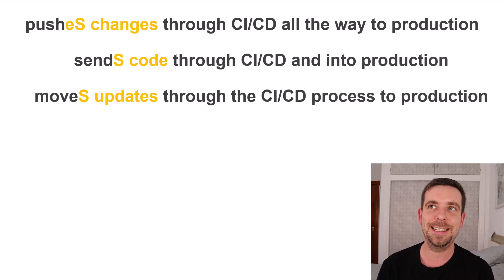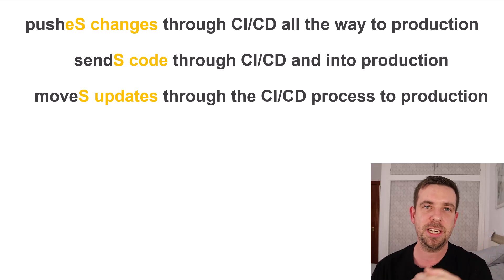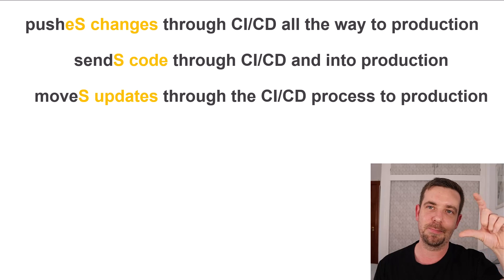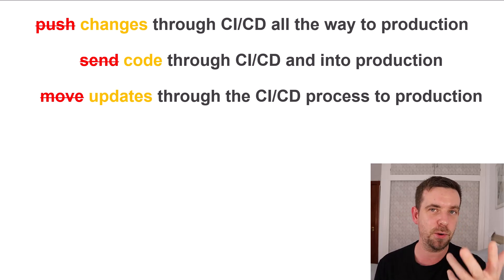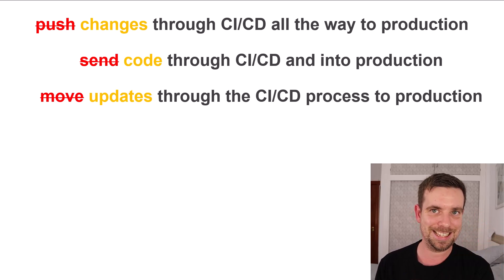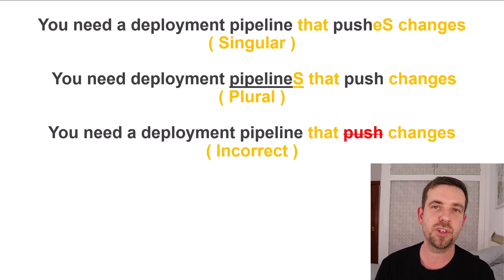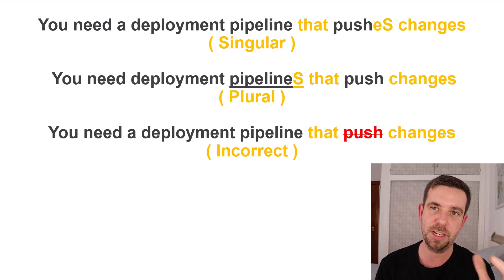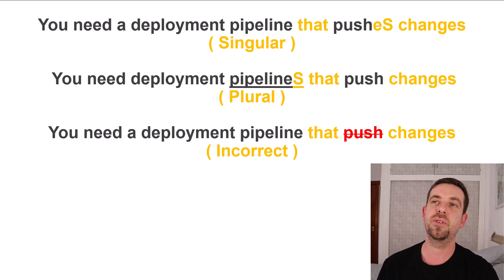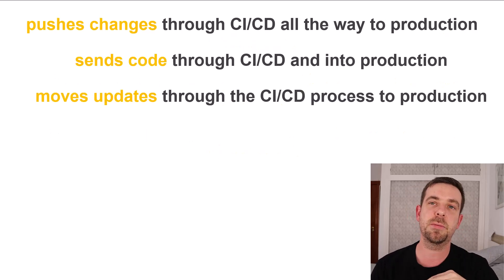Pushes changes through CICD all the way to production. Alternative verbs: pushes changes, sends code, or moves updates. Note the capital S — one of the most common mistakes is forgetting the third-person S: we need a pipeline that push changes is incorrect. A singular subject must have S: pushes. But if it's plural — development pipelines that push changes — no S needed. So the correct forms are pushes changes, sends code, moves updates.